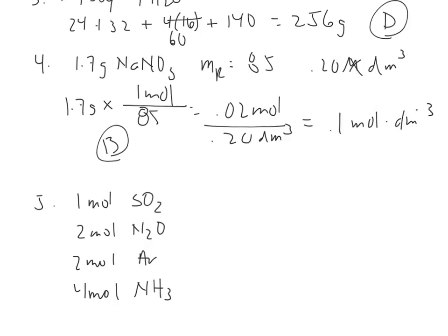So number 5, another multiple choice, they want to know which sample has the greatest mass. So 1 mole of SO2, you've got 32, plus 32, so roughly 64, and just 1 mole would remain 64. 2 moles of N2O, well, nitrogen is roughly 14, and 14 is 28, plus the 16, it's going to be about 44 times the 2 moles.